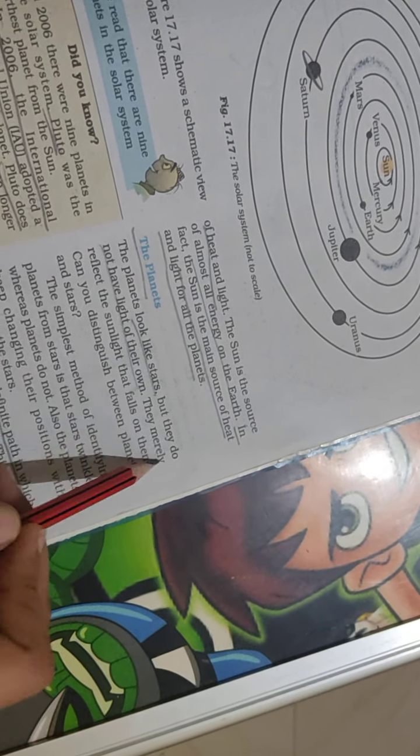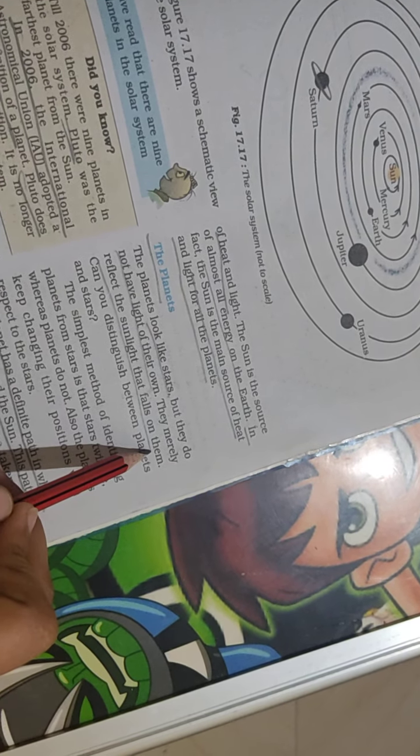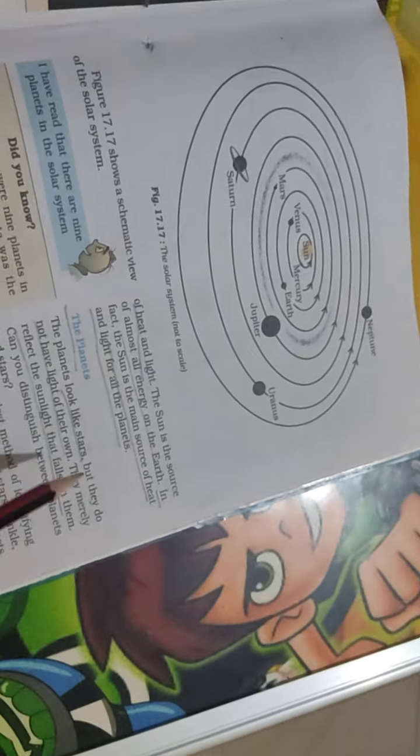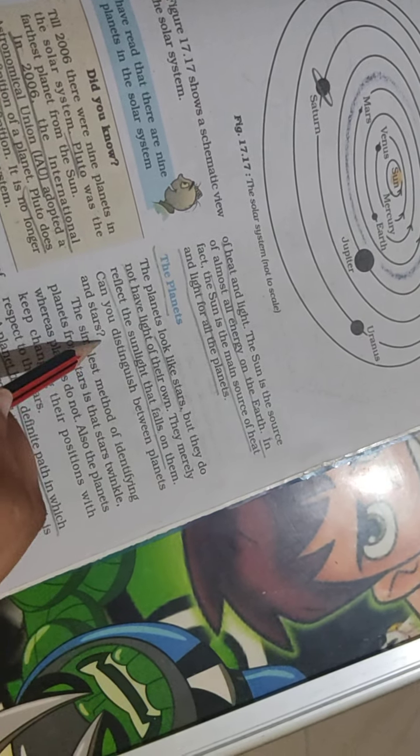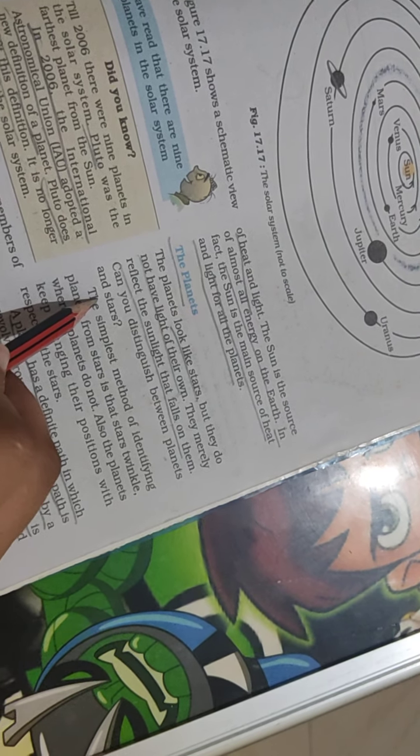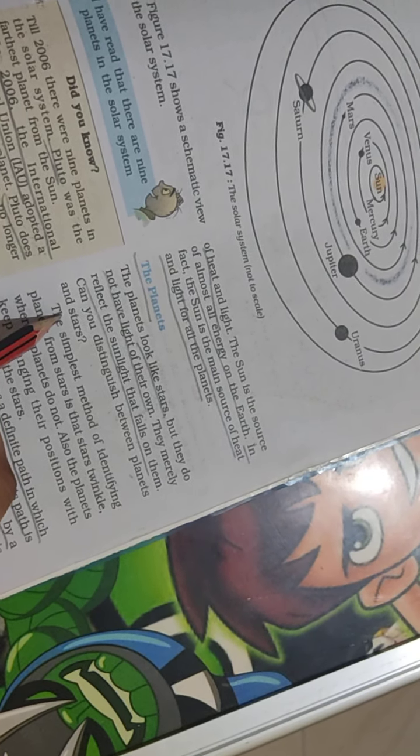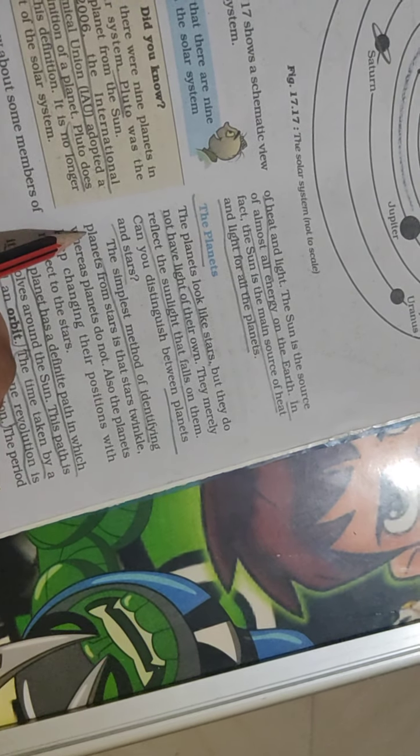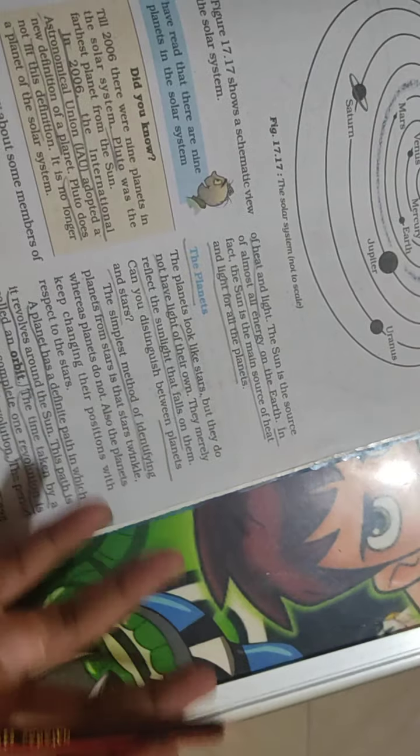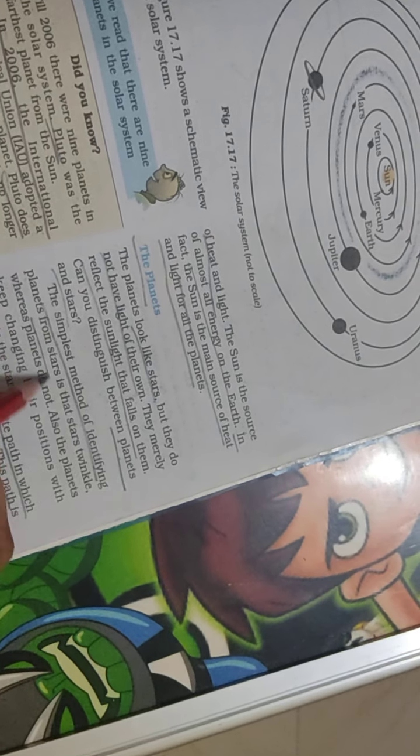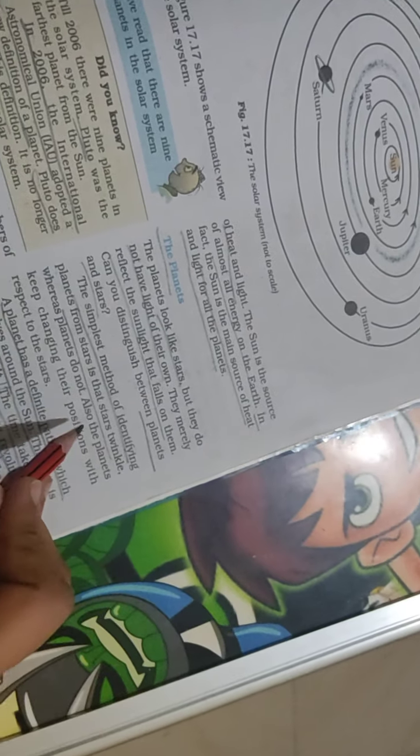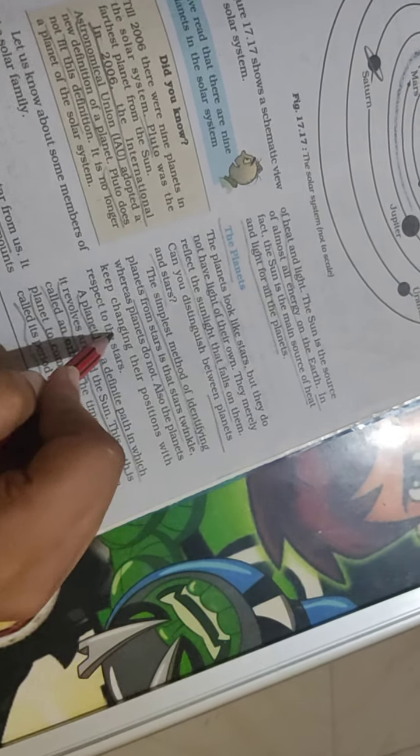Can you distinguish between planets and stars? The simplest method to identify them is that stars twinkle, but planets do not twinkle. Also, planets keep changing their position.